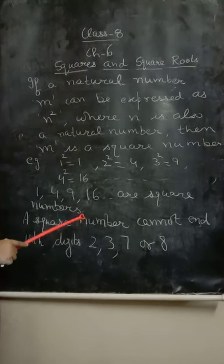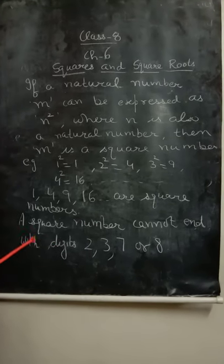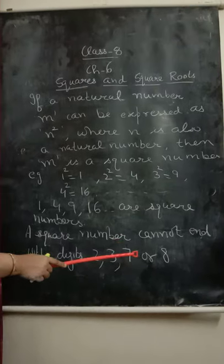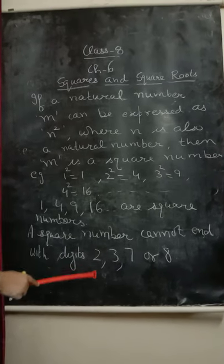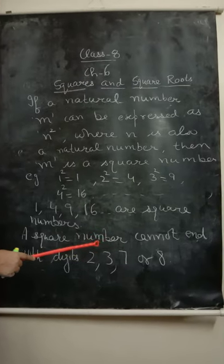Let us understand the property of square numbers that a square number cannot end with digit 2, 3, 7 or 8. It means if a number ends with 2, 3, 7 or 8, it cannot be a square number.